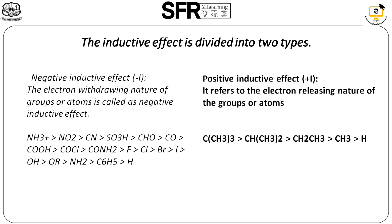Amines are stronger bases than ammonia. The alkyl group increases the electron density on the nitrogen atom due to the plus I effect. More electron density means a greater negative charge on the nitrogen, making it more basic. Thus, dimethylamine is more basic than ethylamine, which is more basic than methylamine, which is more basic than ammonia.